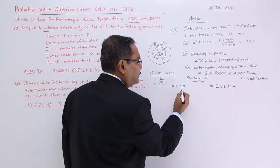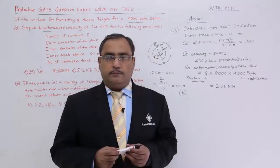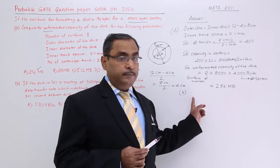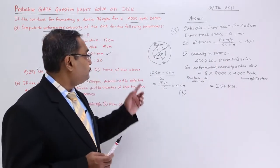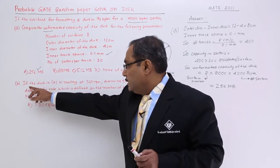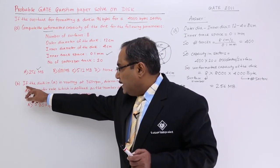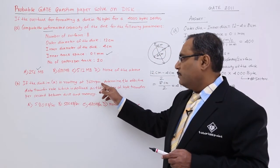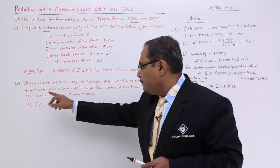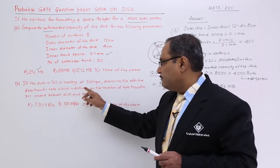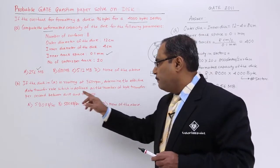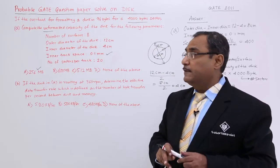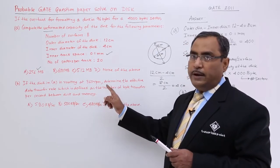Now let me solve Part B. The disk from Part A rotates at 360 revolutions per minute (RPM). We need to determine the effective data transfer rate, defined as the number of bytes transferred per second between the disk and memory.